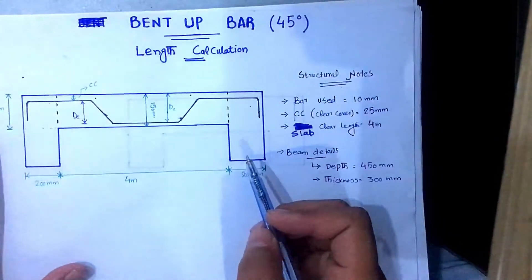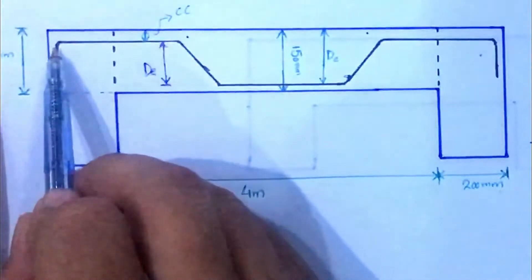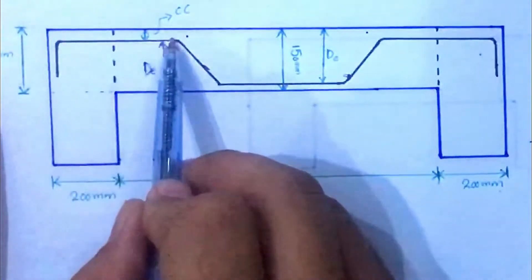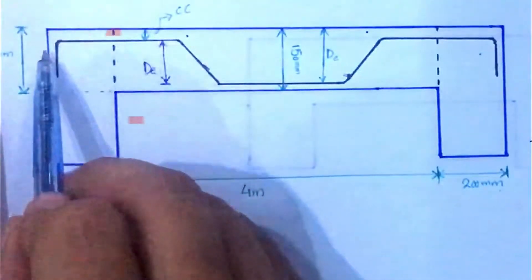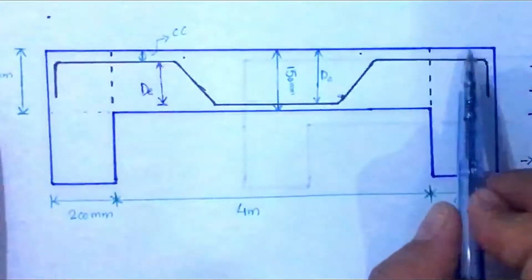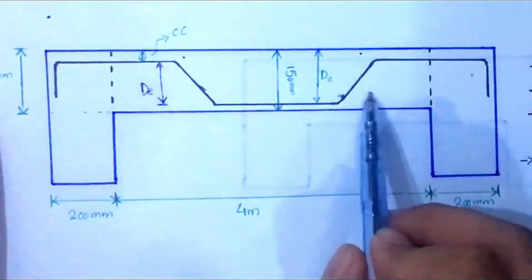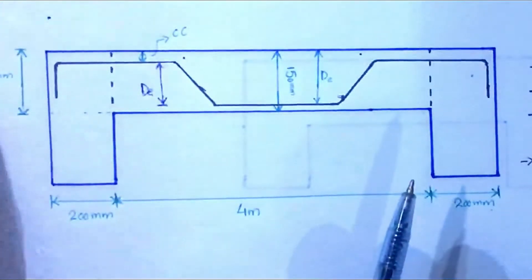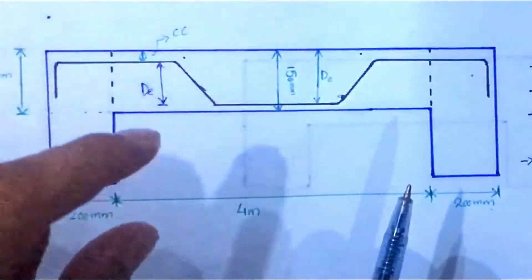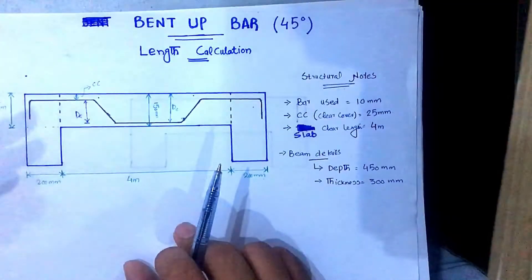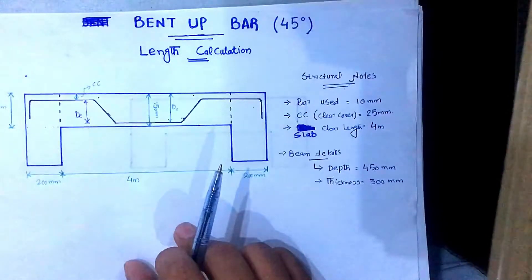If you look at this bar, it is a single bar moving like this. In certain areas it is working as negative reinforcement, and in another area it is working as positive reinforcement. So a single bar is working both as positive reinforcement and as negative reinforcement.